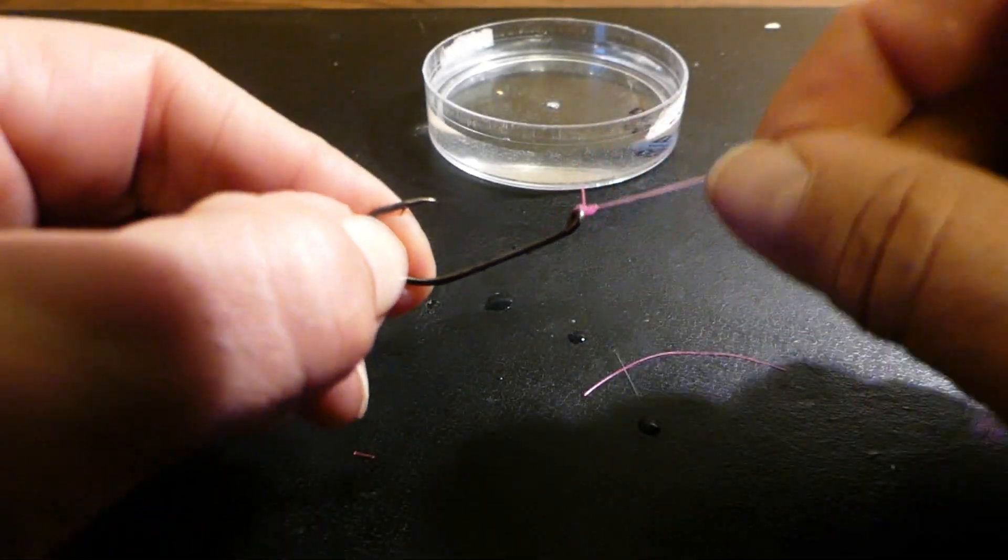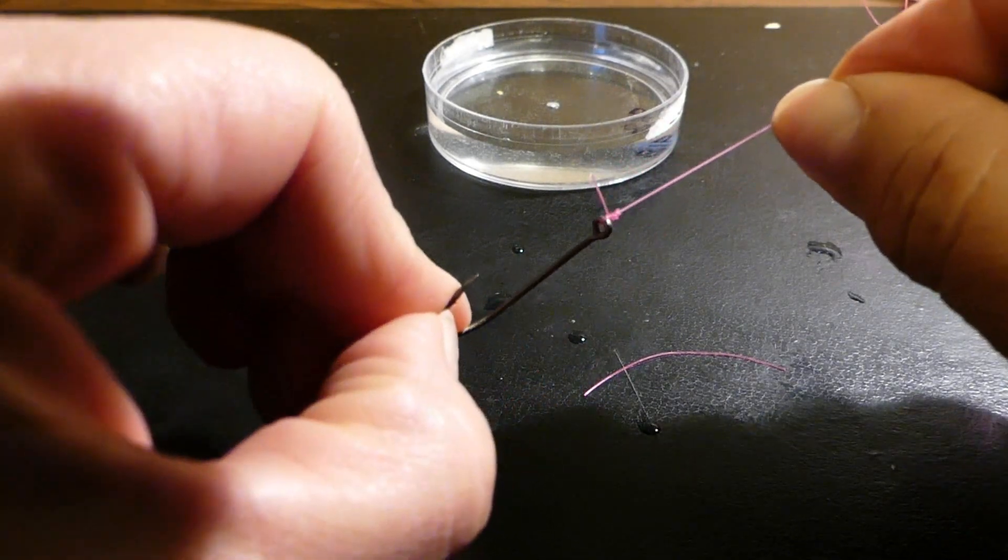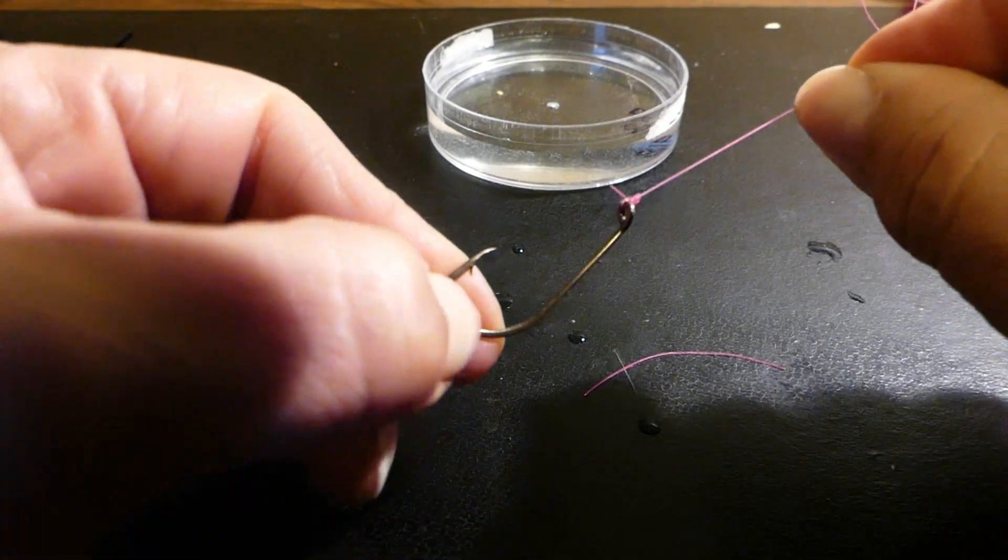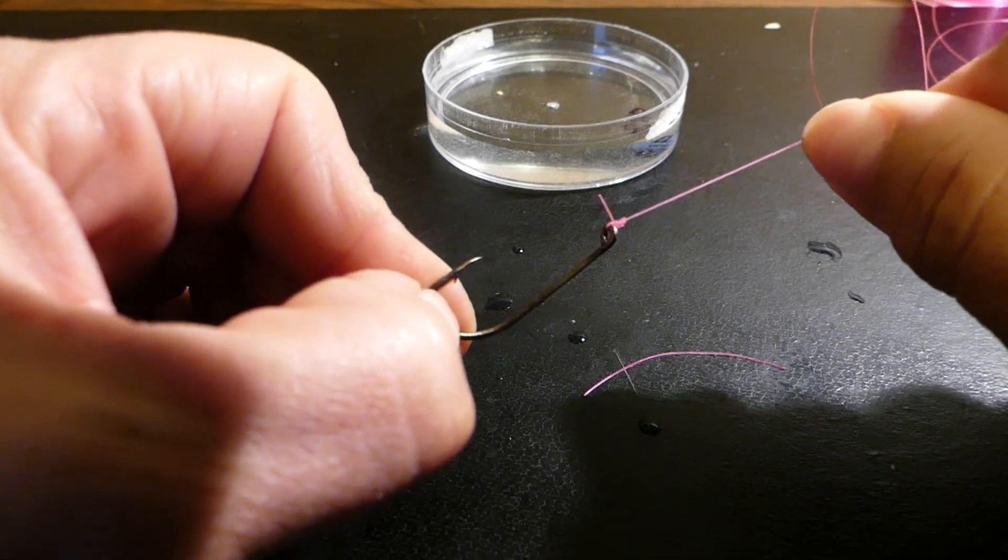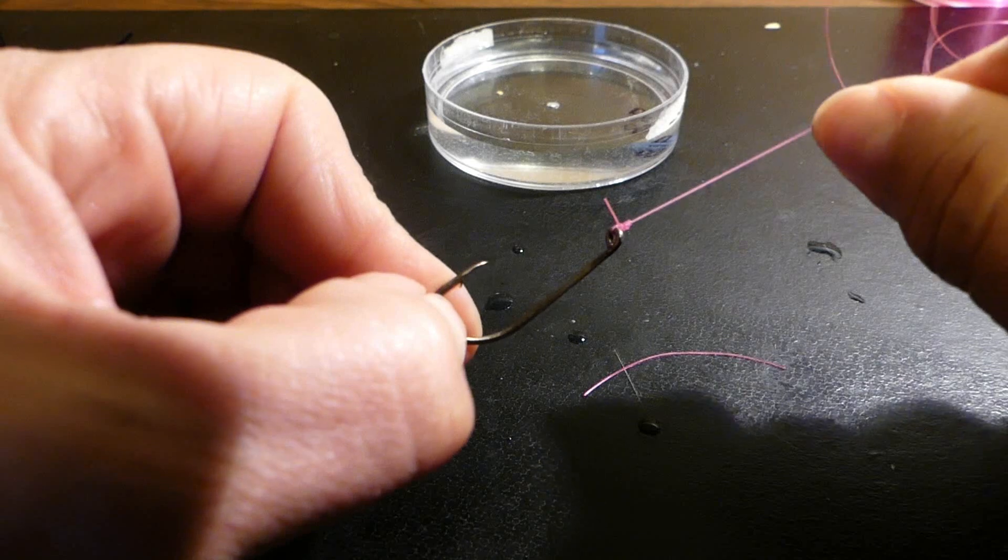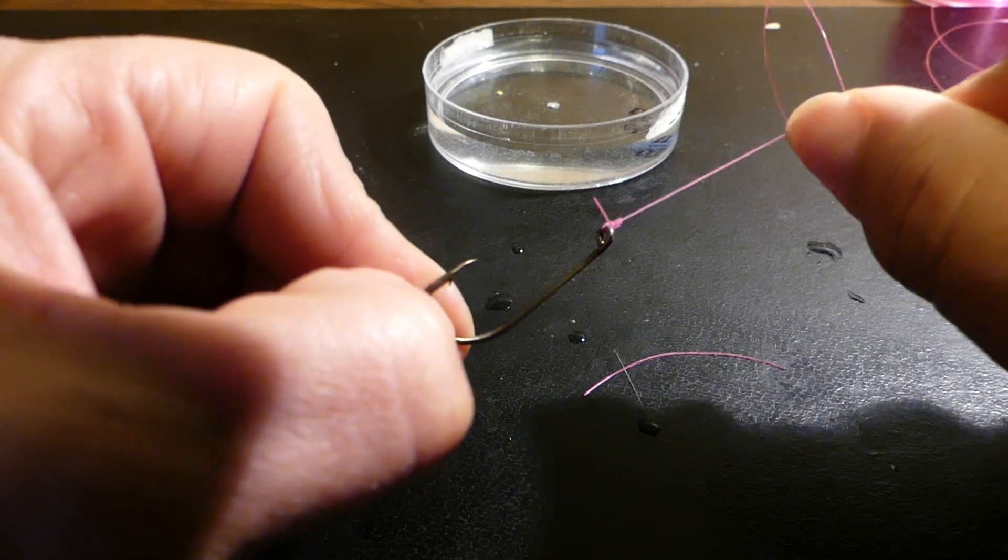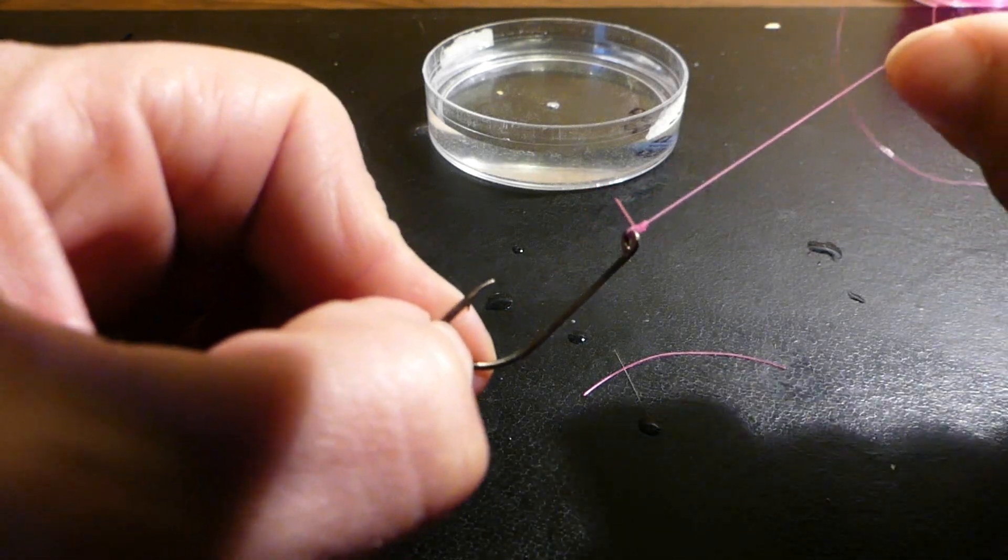There you go. Again, I've left a bit of a tag there to allow the knot to lock down. That's your modified clench knot or double clench knot. Just that one little extra step can add about 15% to 20% extra strength to that knot for this line.